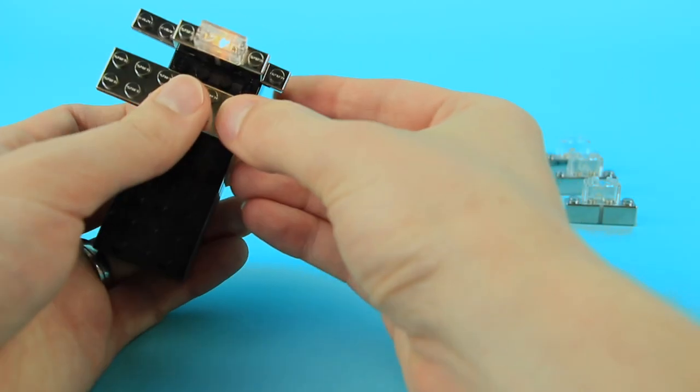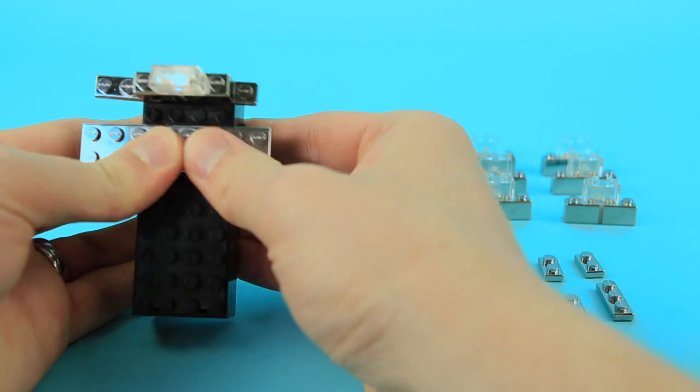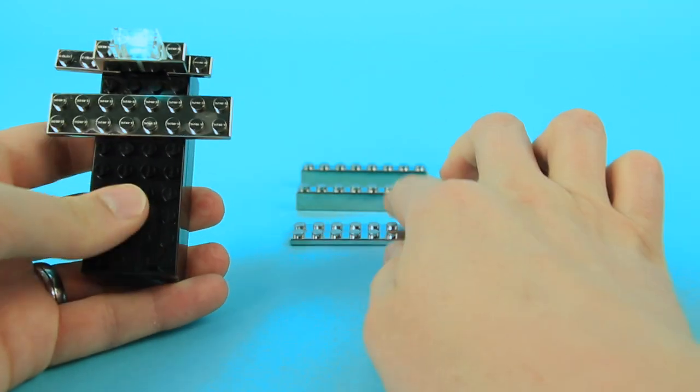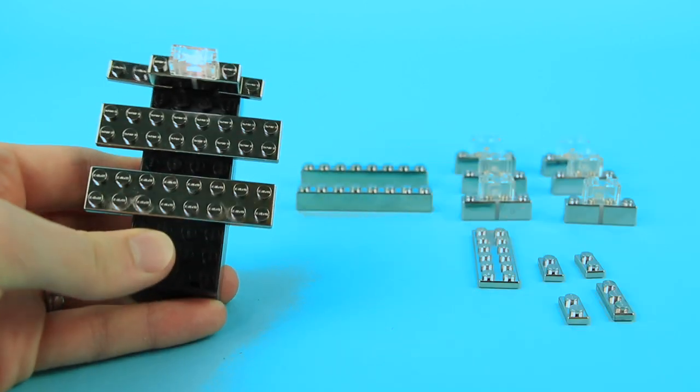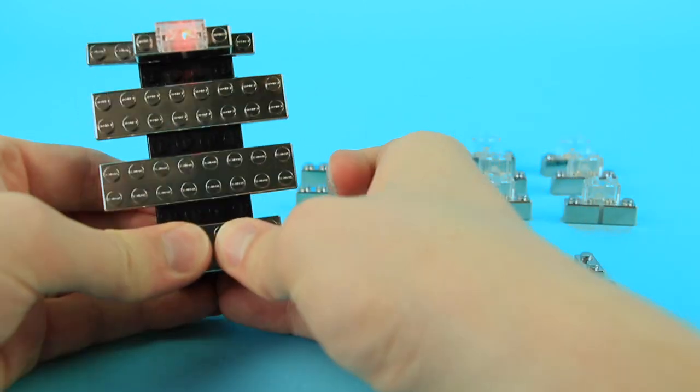Now take a 2x8 plate, place it across the battery box like so, place another 2x8 plate below that, and at the bottom do a 2x6 plate.